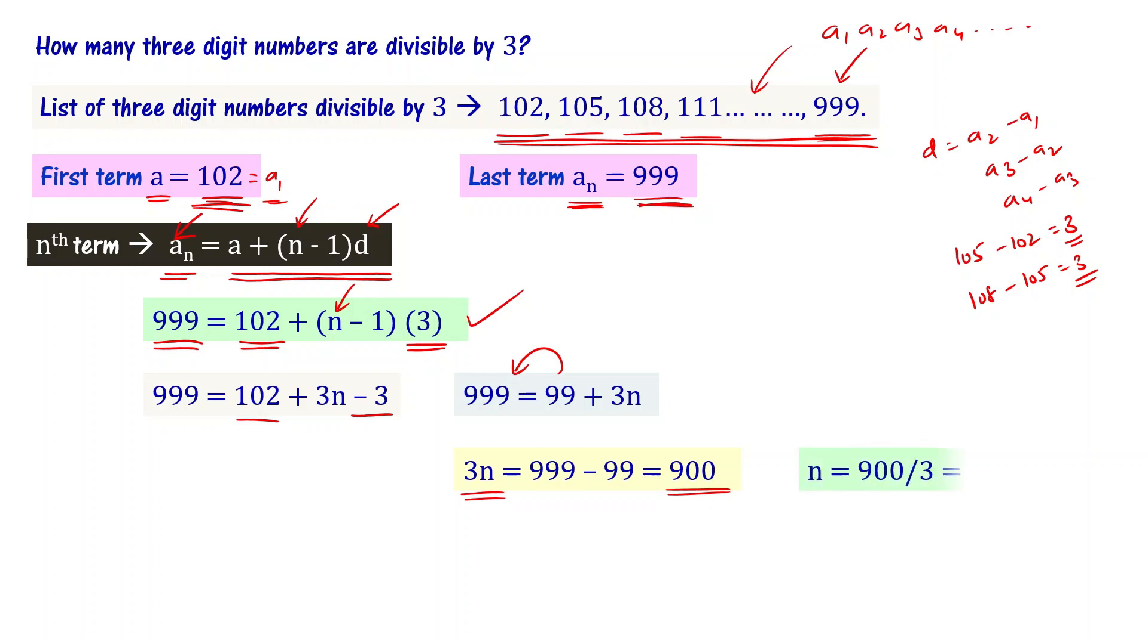Transposing 99 to the other side: 3n equals 999 minus 99, which equals 900. So 3n equals 900 and n equals 900 by 3, that is equal to 300.